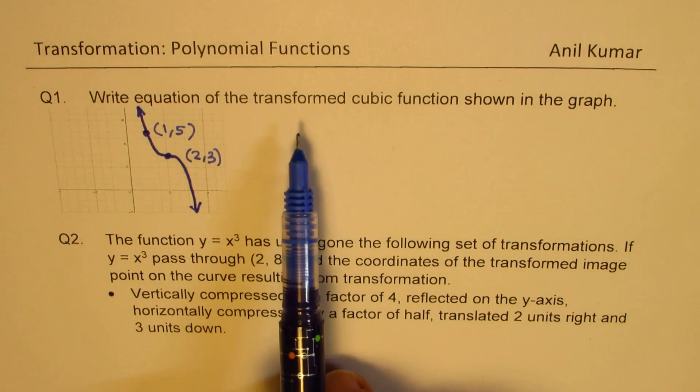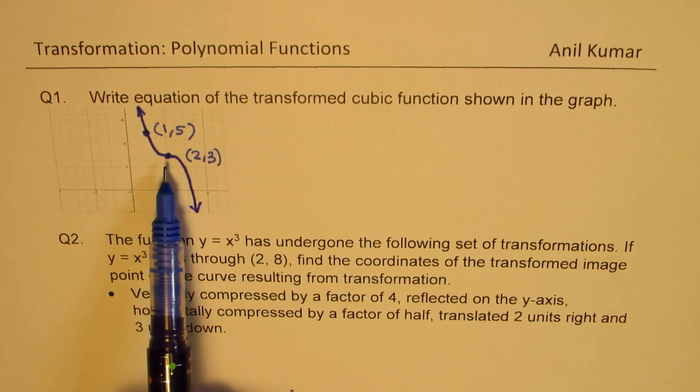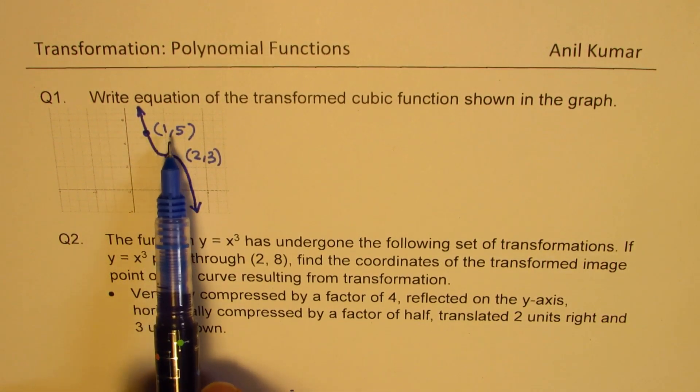Question number 1. Write equation of the transformed cubic function shown in the graph. We are actually given here two points, 2, 3 and 1, 5.